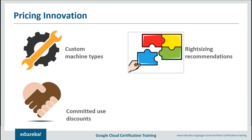Committed use discounts are similar to sustained use discounts. If you use instances for longer durations, GCP gives you a 25% discount on sustained usage of its VMs or instances. So if you have committed use, you are going to get significant discounts. These are the various pricing innovations which GCP has brought to the market.